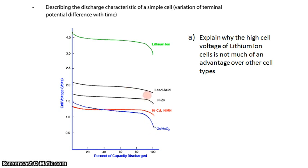We see that these other four types of secondary cells have cell voltages in the range of 1.25 to 2 volts, whereas lithium-ion is all the way up here at 4 volts.